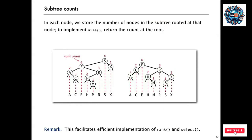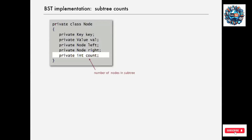Now, what about operations like rank and select? How many keys are there less than a given key? And give us the seventh largest key. To facilitate implementing those operations and also size, all we do is keep an extra field in each node, which is the number of nodes in the subtree rooted at that node. This tree has eight nodes in it; this subtree has six nodes in it, and so forth. Those counts are going to not only enable us to immediately implement the size function — just return the count at the root — but also give us good implementations of rank and select.